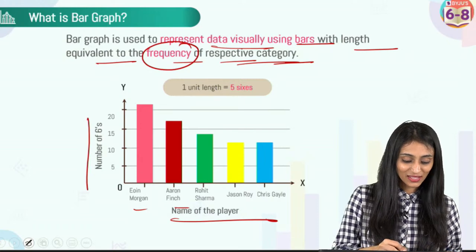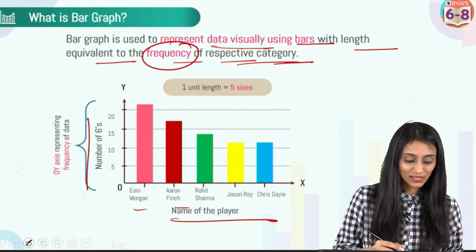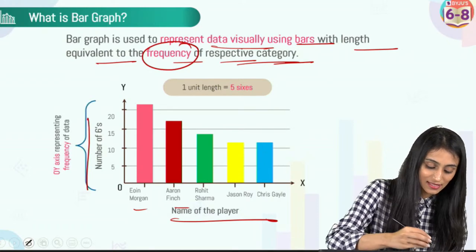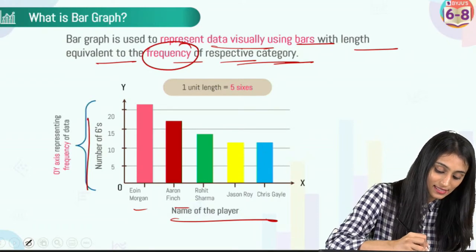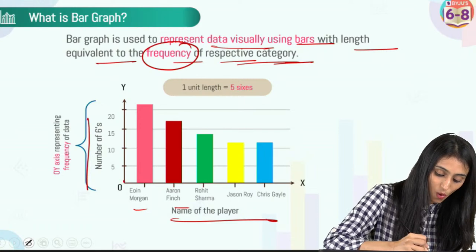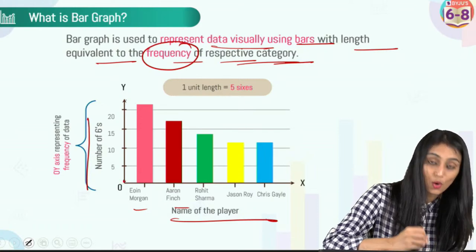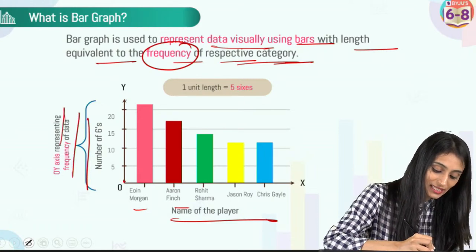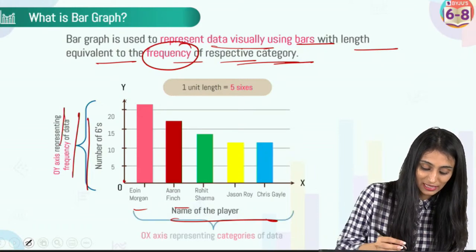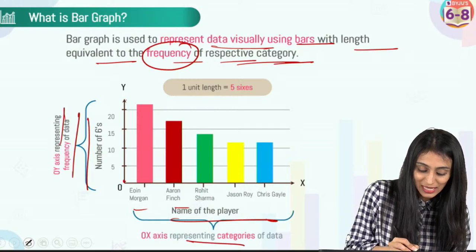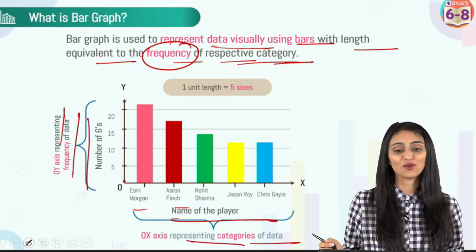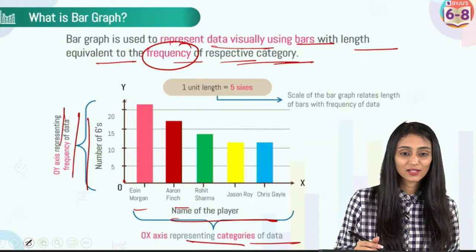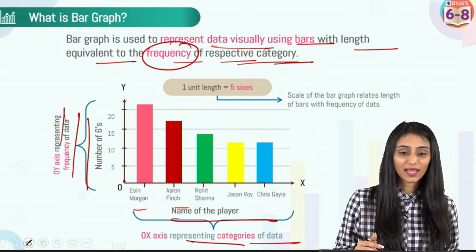On the x-axis we have the categories of data, on the y-axis we have the frequency, and the origin is at zero. I hope this is clear to all of you.